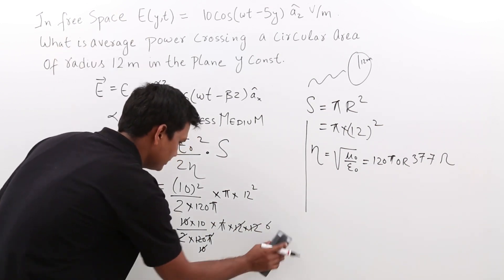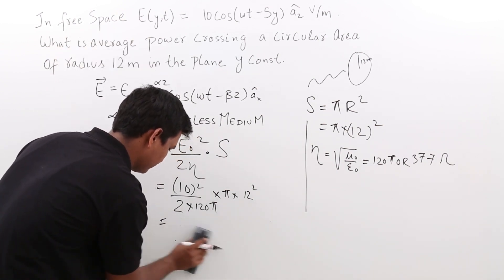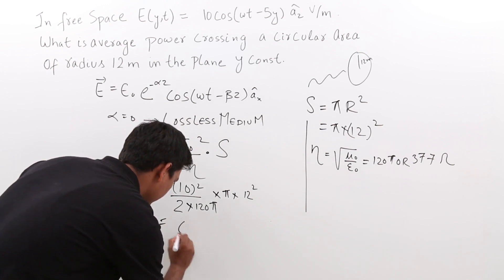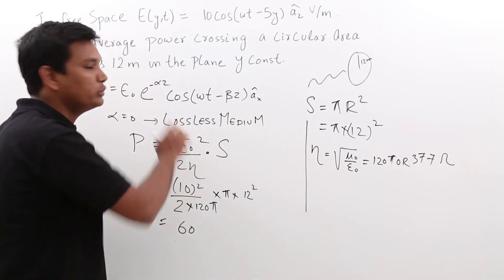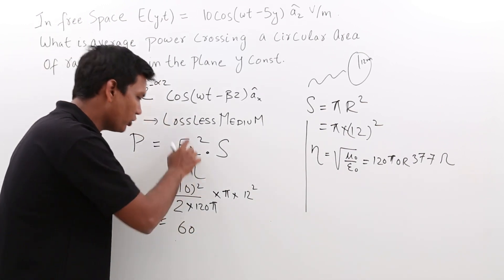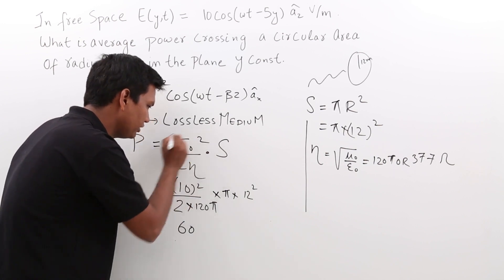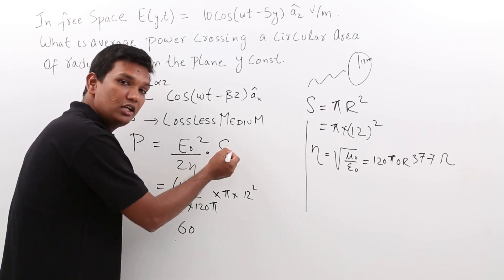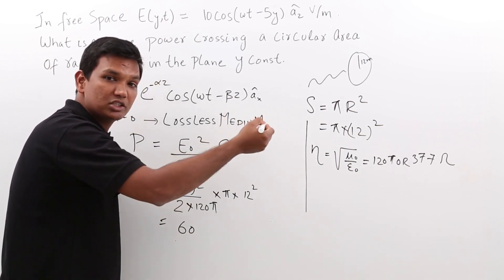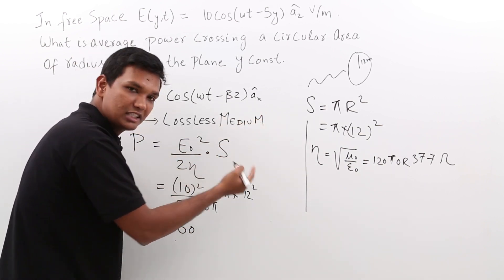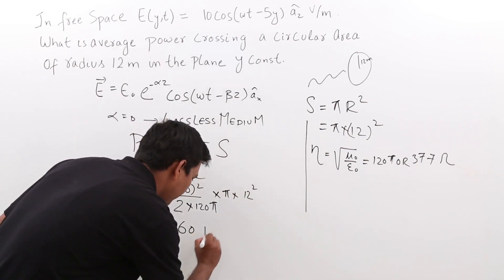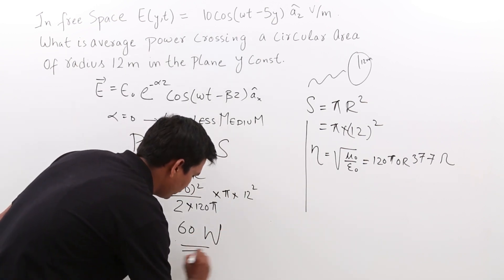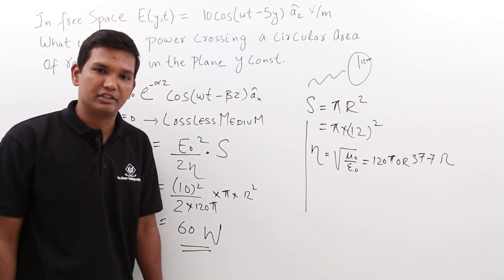So, I will rub this. So, this will be nothing but 60. And what is the unit in this case? We are talking about the unit of this quantity. If you refer, the unit of this quantity is watt per meter square, but you are multiplying with area. So, watt per meter square into meter square, the unit of area is meter square. So, it would be nothing but watt. So, we have concluded the answer of this question.